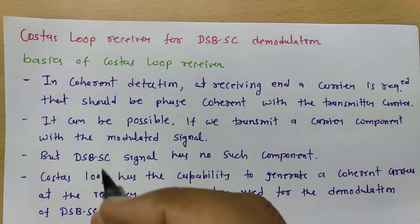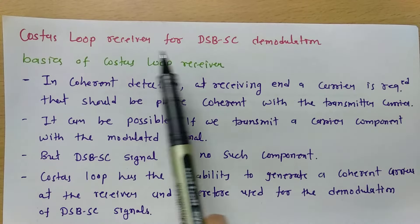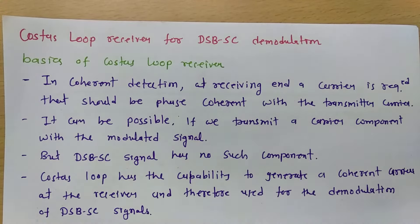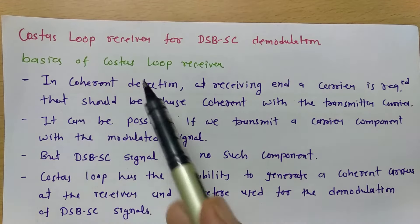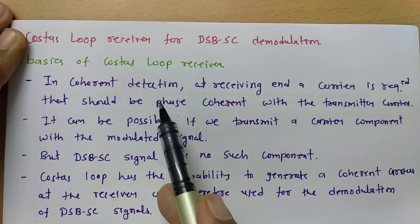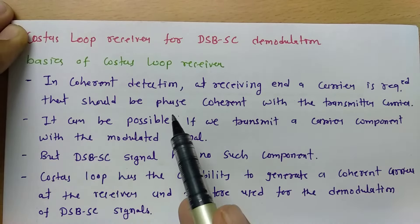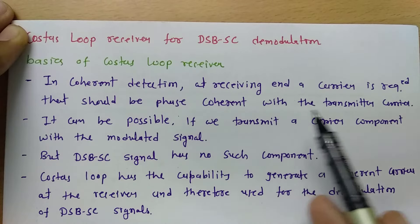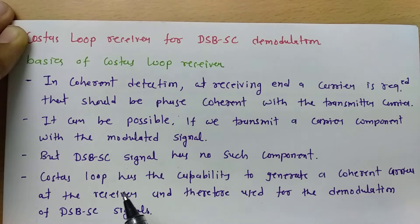Welcome to the analog communication playlist. In this session, I will explain the Costas loop receiver for DSBSC demodulation. This session is prepared based on a request from a student on my channel. Let us begin with the basics of Costas loop receiver. In coherent detection, at the receiver end, a carrier is required that should be phase coherent with the transmitter carrier, and only then can you demodulate that signal.